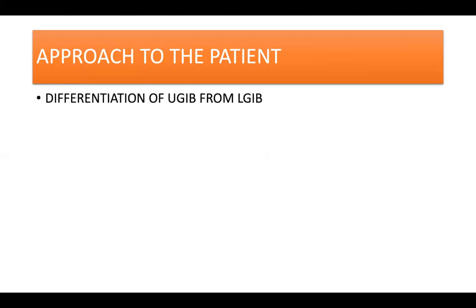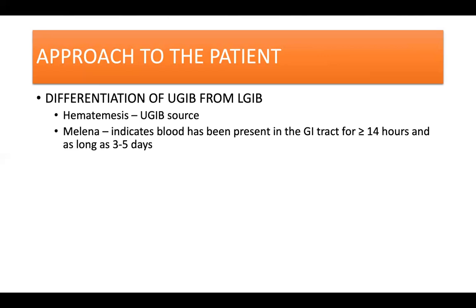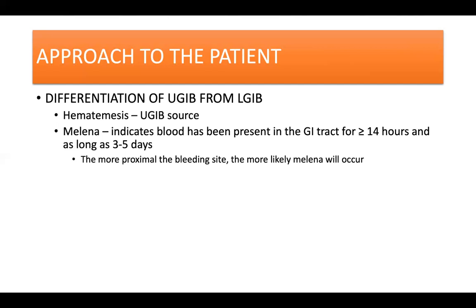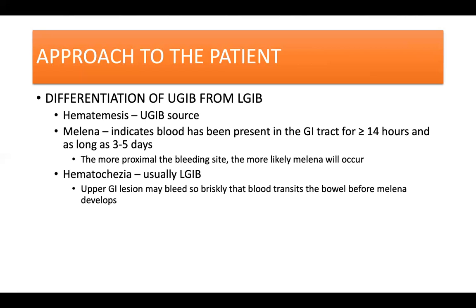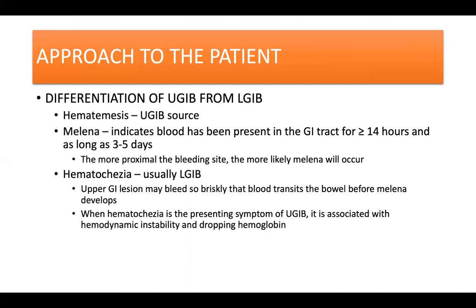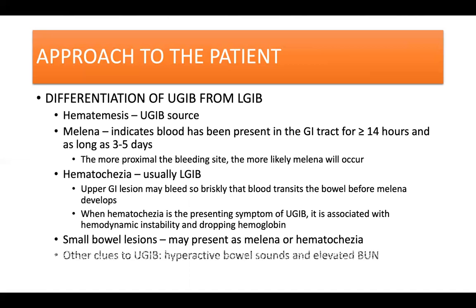The next step is to differentiate between upper and lower GI bleeding. Hematemesis indicates an upper GI source. Melena indicates blood has been in the GI tract for more than or equal to 14 hours and as long as 3 to 5 days; the more proximal the bleeding site, the more likely melena will occur. Hematochezia usually represents a lower GI bleed, but an upper GI lesion may bleed so briskly that blood transits the bowel very quickly before melena develops. When hematochezia is the presenting symptom of upper GI bleeding, it is associated with hemodynamic instability and a dropping hemoglobin. Bleeding lesions of the small bowel may present as melena or hematochezia. Other clues to upper GI bleeding include hyperactive bowel sounds and an elevated BUN.